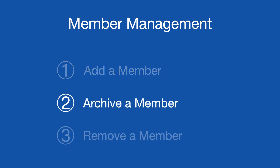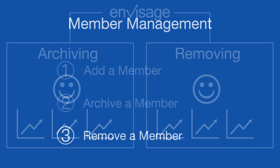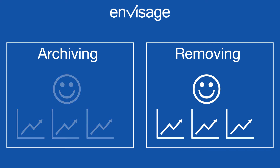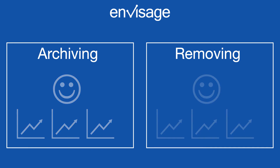Now let's move on to archiving or removing a member. Both actions will remove their access to Envisage; however, we recommend archiving a member rather than removing one. Here's why: one, all graphs assigned to the member are also automatically archived, meaning their graphs will still be included in any calculated or comparison graphs; two, you can easily unarchive the member or their graphs if needed in the future. In summary, you don't lose any of the vital information associated with that member when you archive.